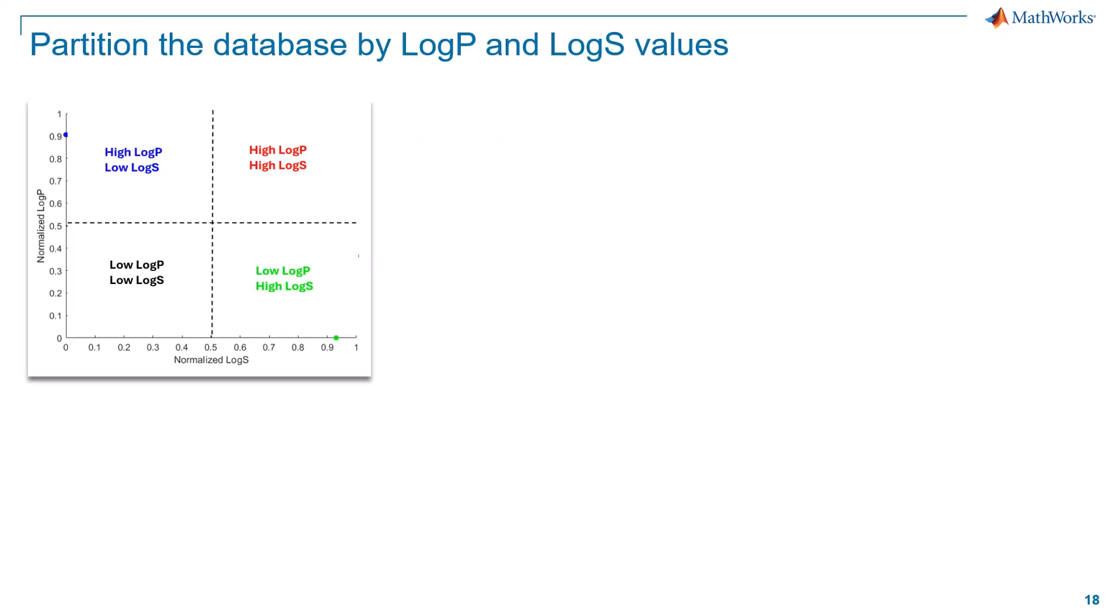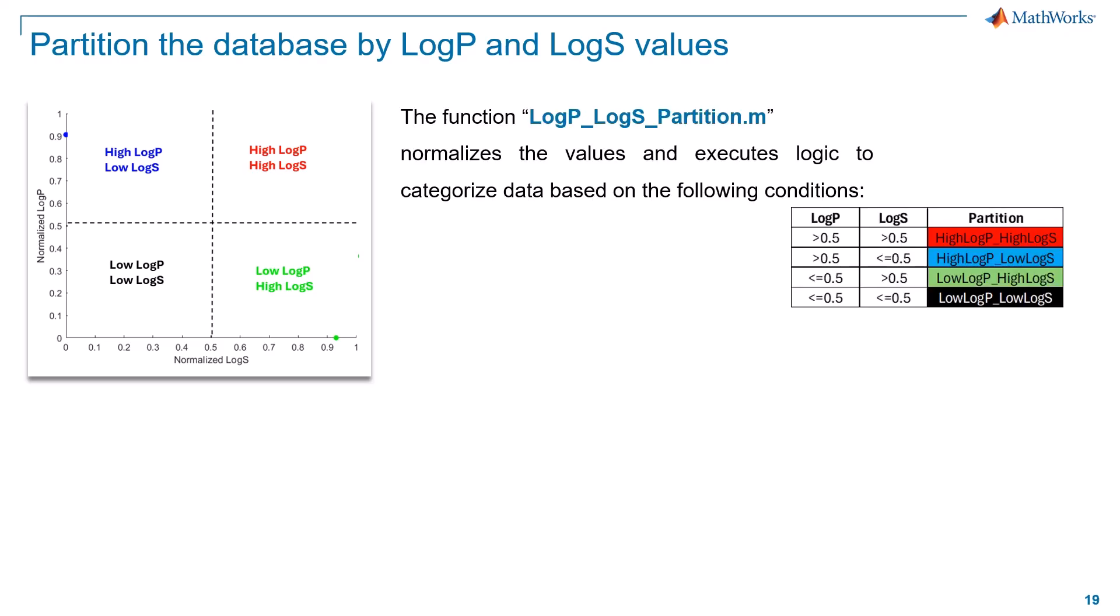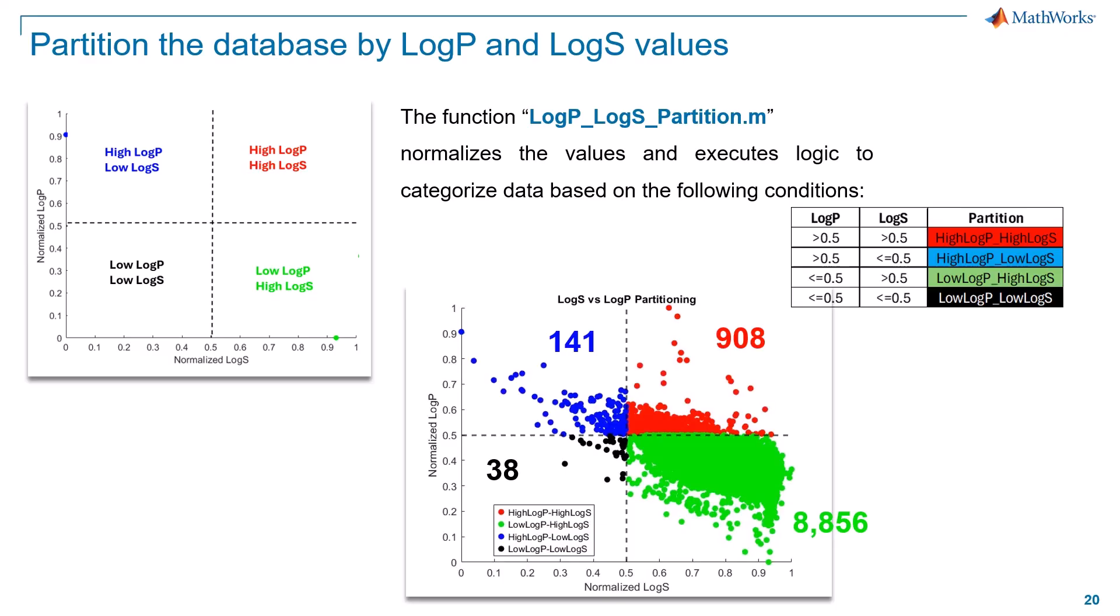Next, in this example, we'll see how the molecules in this database are distributed based on their log s log p values. This is done by making this custom MATLAB function called log p log s partition dot m. If you open this function, you can see that all it is doing is reading the log p and log s values, normalizing them, and simply using this logical table for partitioning. The code plots this nice distribution and gives the number of molecules in each partition. Interestingly, you can see that most of the molecules in this dataset have higher water solubility with low lipophilicity.